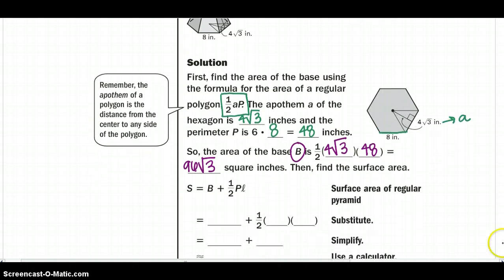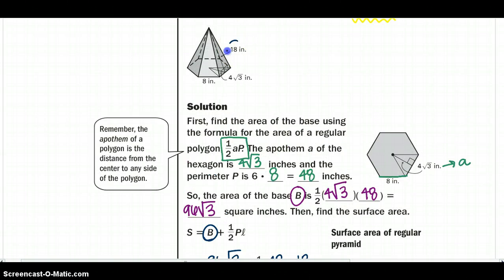So we can just fill in our base, so we just found. So 96 square root of 3, the base area, plus one half the perimeter, which we got 48, times the slant height, which is 18 from above. Remember, just being able to recognize that slant height will be important.